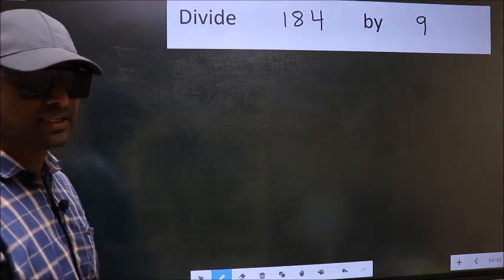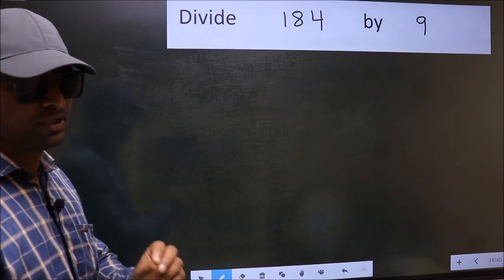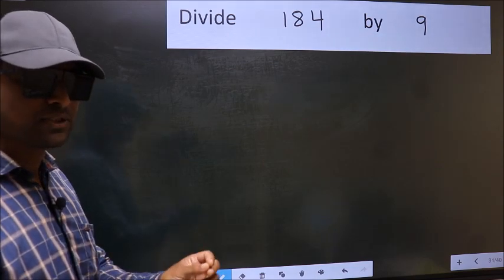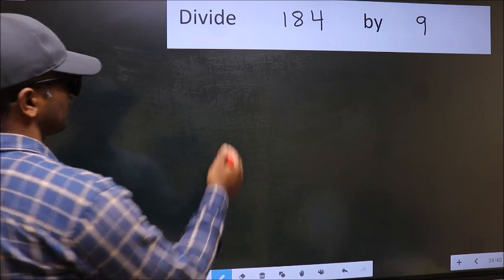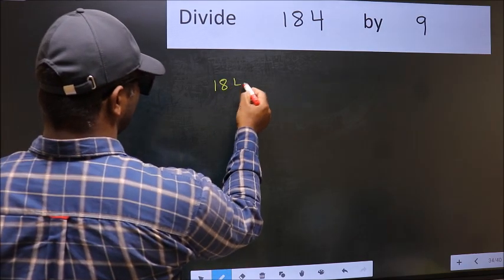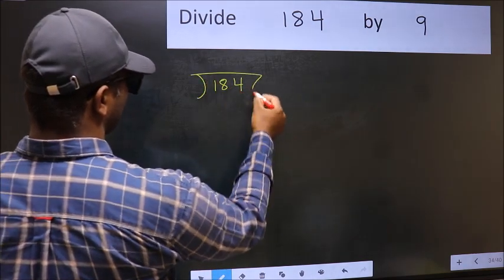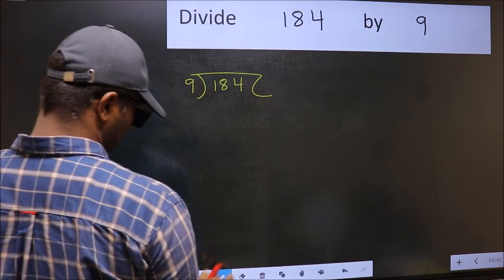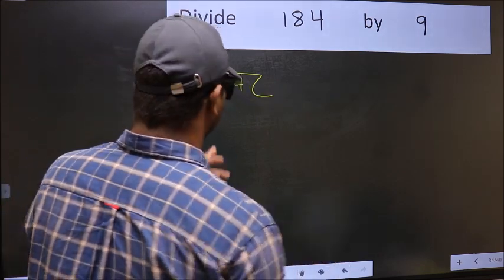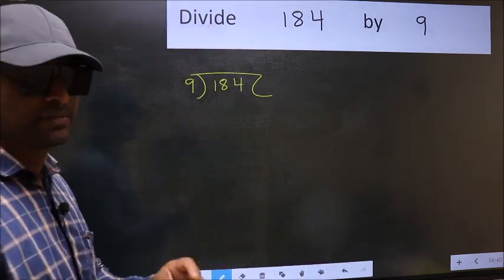What is the mistake that they do? I will let you know. But before that, we should frame it in this way. Okay. 184 and 9 here. This is your step 1.